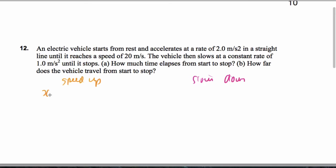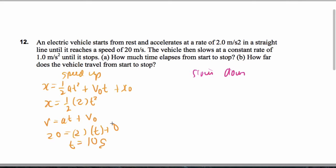So let's split this into two parts. So we have x is 1 half at squared plus v naught t plus x naught. That doesn't tell me. So that means x is 1 half times 2 times t squared. These are both zero. Two equations. One equation and two unknowns can't work with that. Let's see if we can get the time expense speeding up. So we got v equals at plus v naught. So 20 is 2 times t plus zero. So t is 10 seconds for the first part.